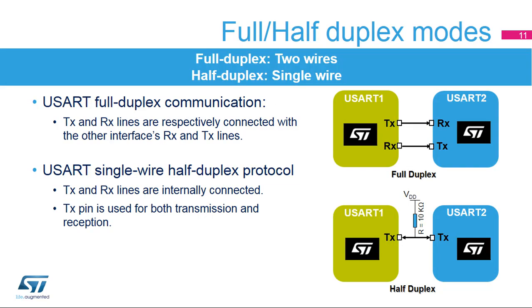The USART supports full duplex communication, where TX and RX lines are respectively connected with the other interface's RX and TX lines. The USART can be configured to follow a single-wire half-duplex protocol, where the TX and RX lines are internally connected. In this communication mode, only the TX pin is used for both transmission and reception.